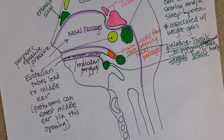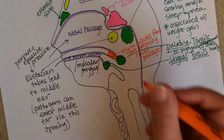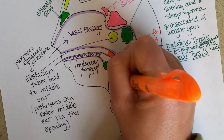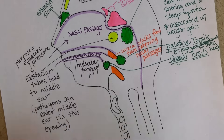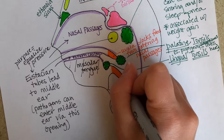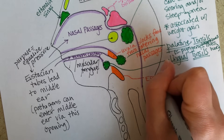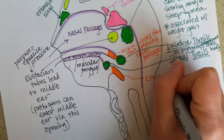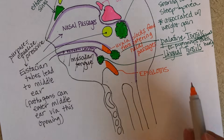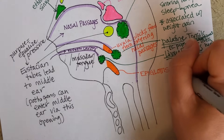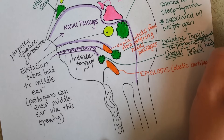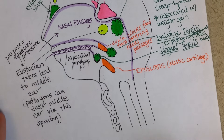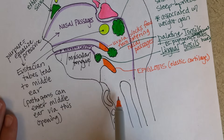Then there is the very important epiglottis — both it and the uvula are important structures that help to prevent choking and food going the wrong way. The epiglottis is made of elastic cartilage, and when you swallow, the epiglottis covers up the opening to the trachea.